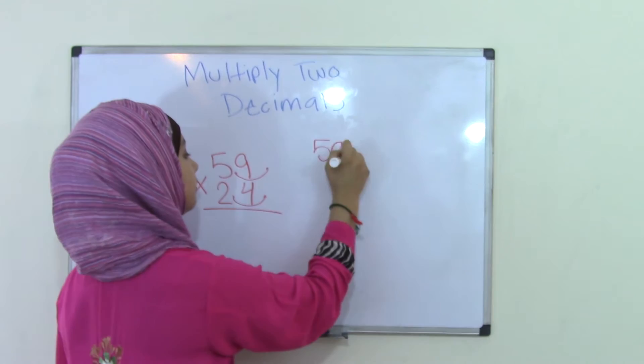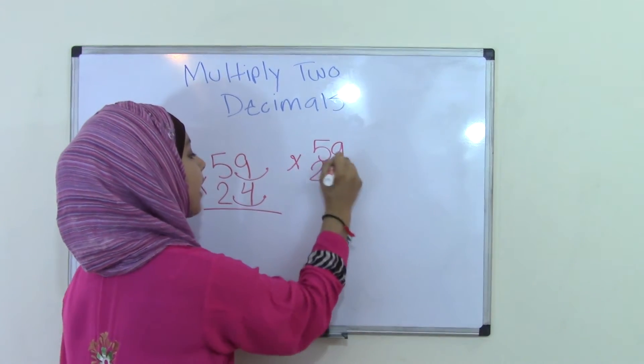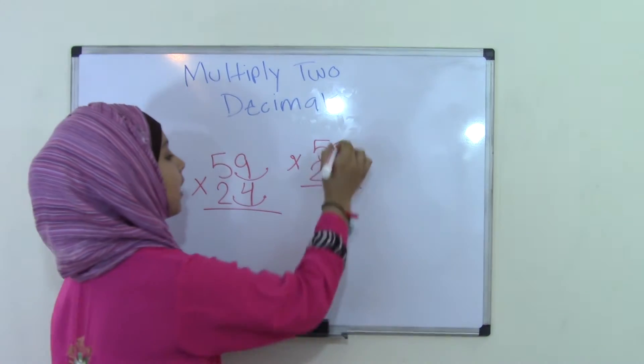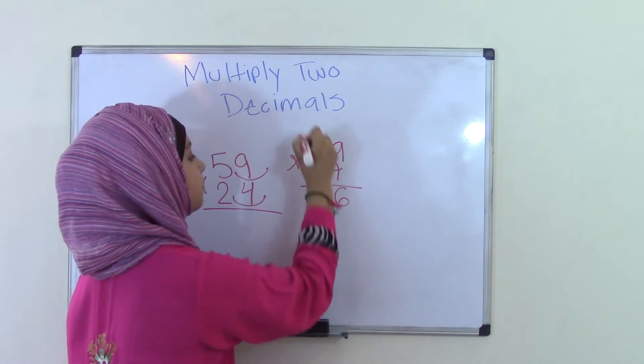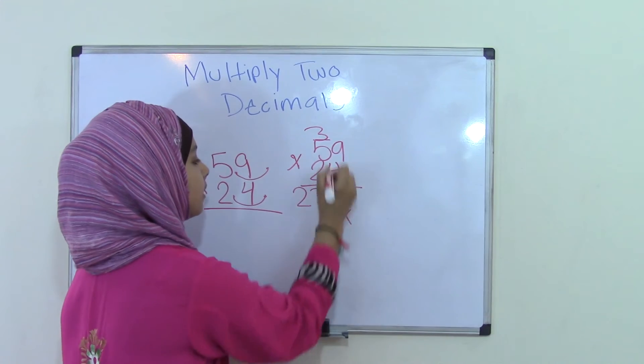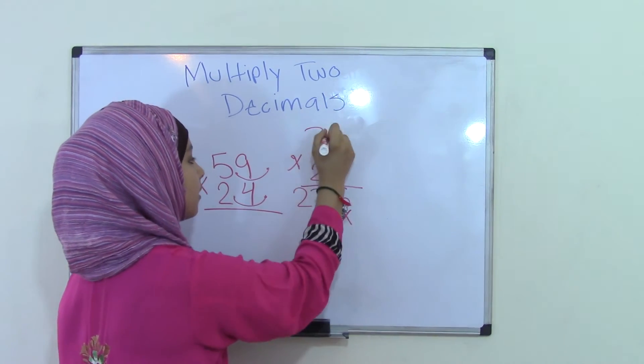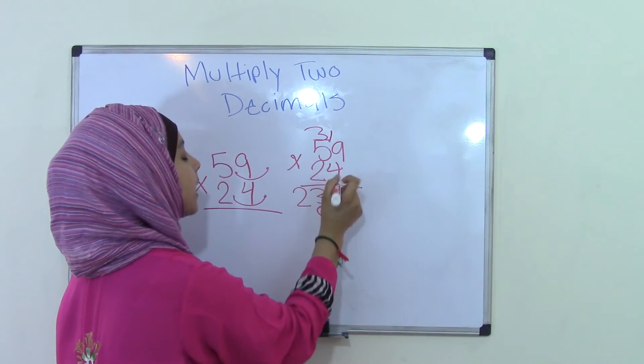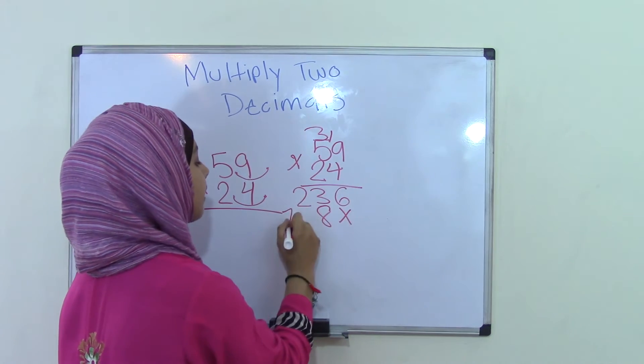59 times 24 and do simple multiplication. So 9 times 4 is 36. 5 times 4 is 20 plus the 3 equals 23. 9 times 2 is 18. Carry the 1. 5 times 2 is 10 plus the 1 equals 11.